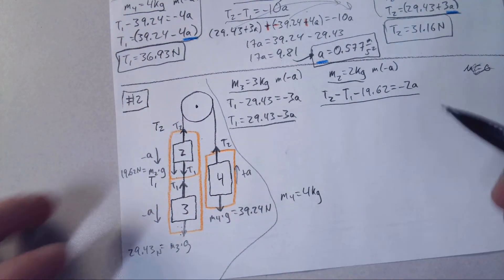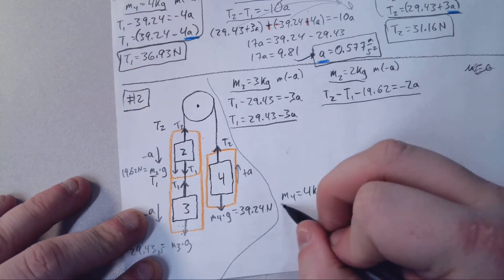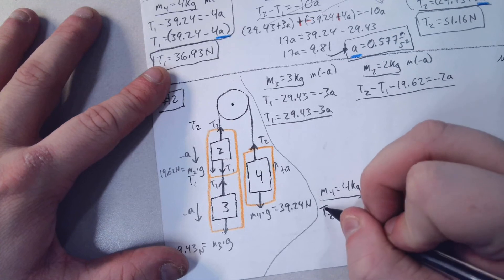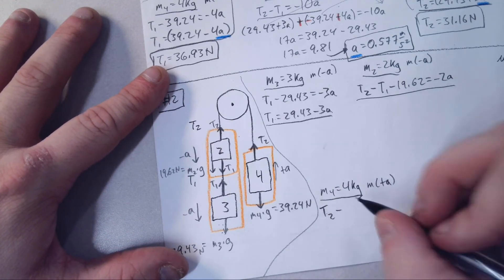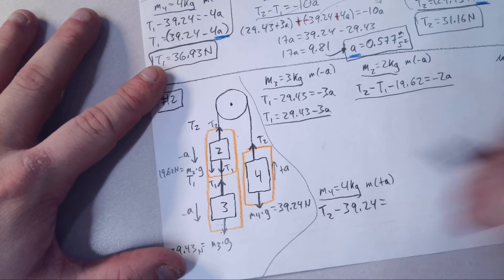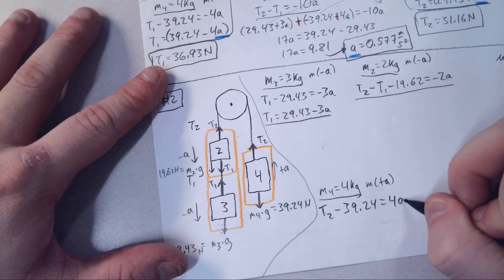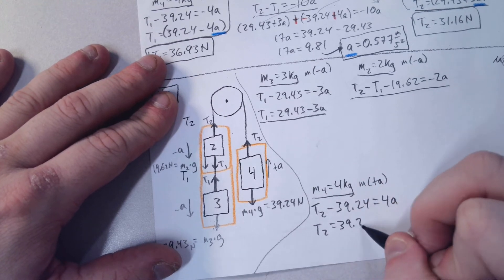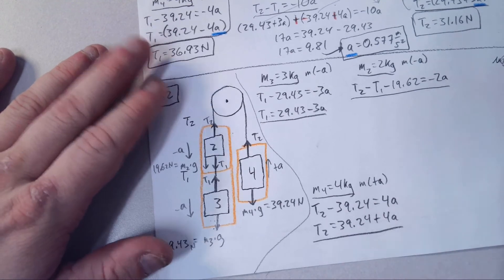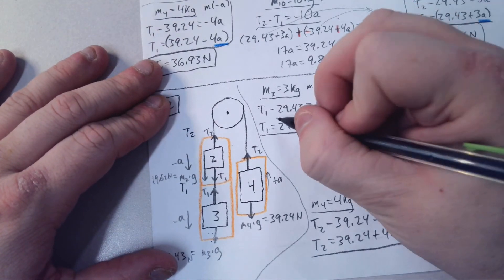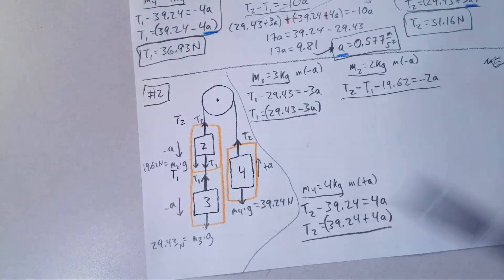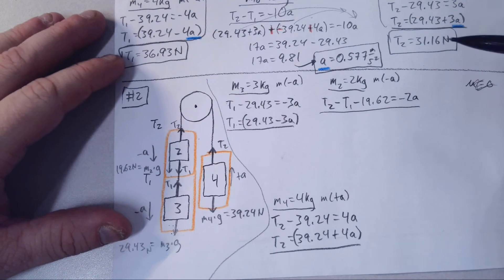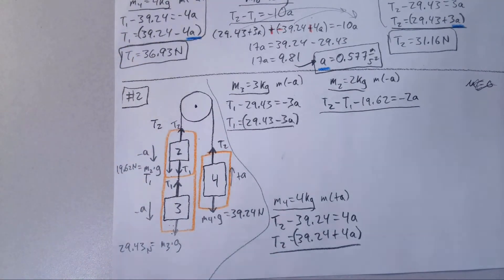This one is going up. So it's M times positive A. T2 minus force of gravity, which we calculate as 39.24, equals M times positive A, 4 times positive A, or just 4A. We'll go ahead and add those over like we have in the past. Plus 39.24 plus 4A. Make sure when we write these, we want to put parentheses. Because we're going to have to substitute, and we have some negatives in there that we're going to have to distribute for T1. Don't try to plug and distribute and solve it all at once. You're opening yourself up for error.